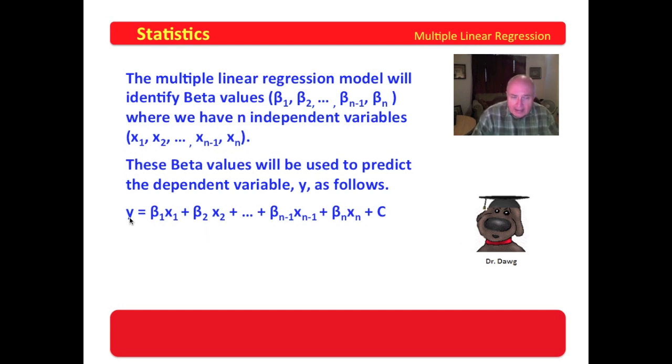The predicted value of y is equal to the first beta times the first independent variable's value, plus the second beta times the second independent variable, and so on and so forth, plus some arbitrary constant C. This is a pretty powerful linear model, and we will develop some of these. I think it will help you as we move forward to see what that actually looks like.